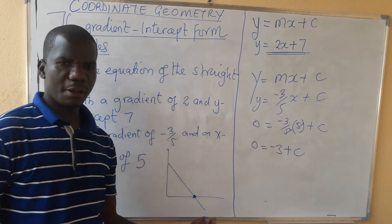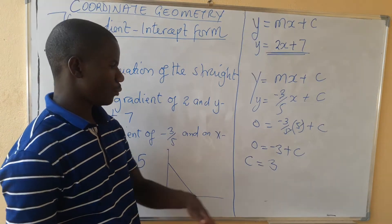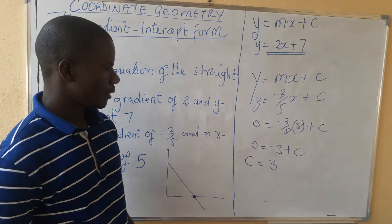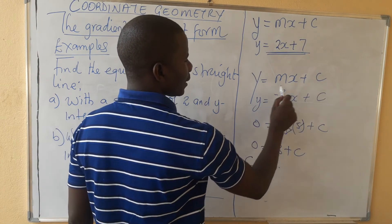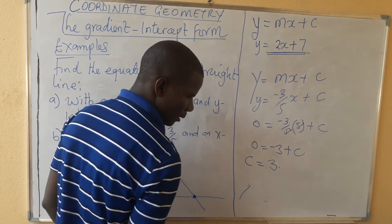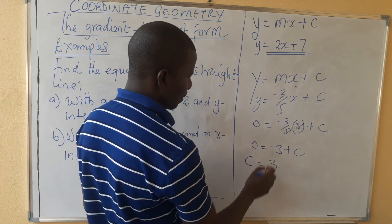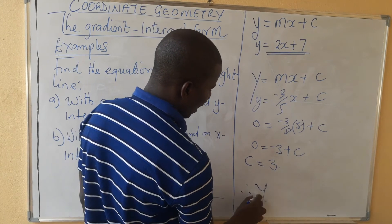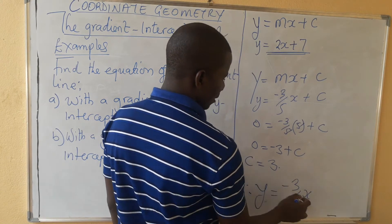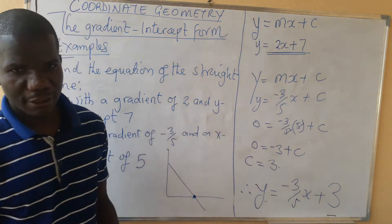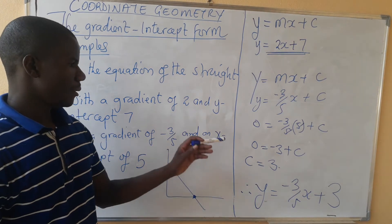So c is equal to 3, because we bring -3 to the other side and its additive inverse is positive 3. This value of c is our y-intercept. Therefore the final equation is y = -3/5 x + 3, where 3 is the y-intercept we calculated from the given x-intercept.